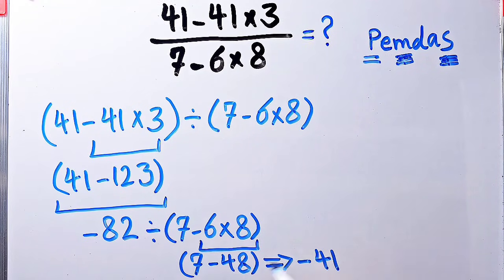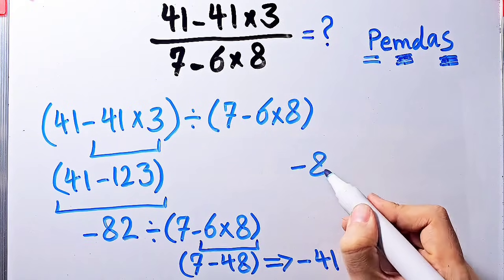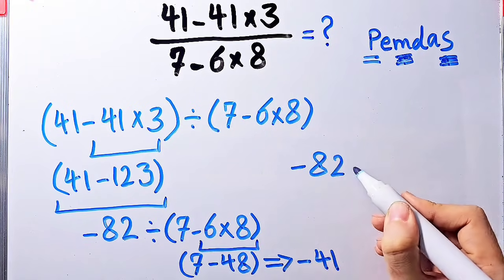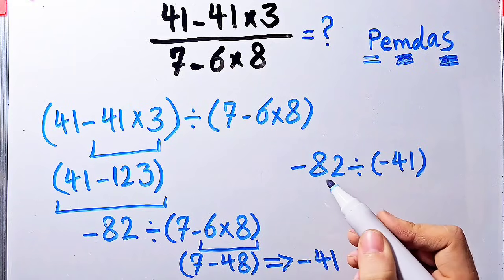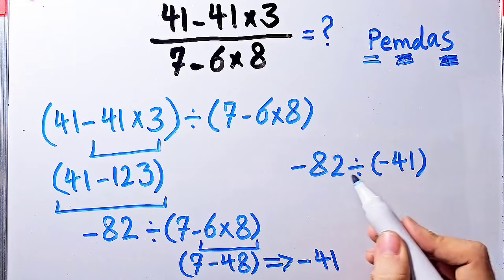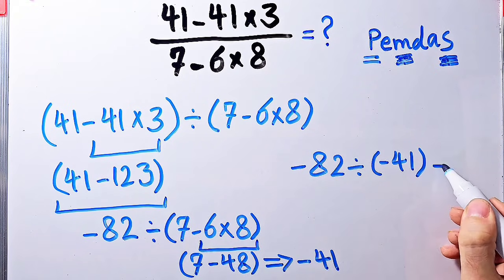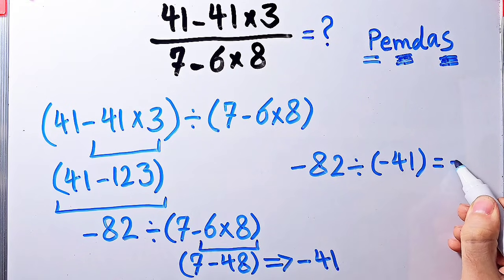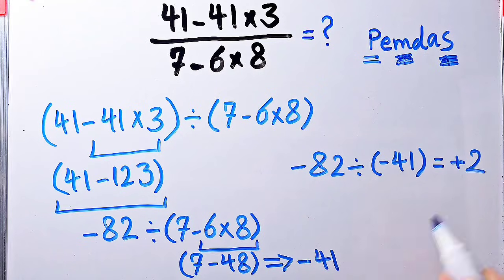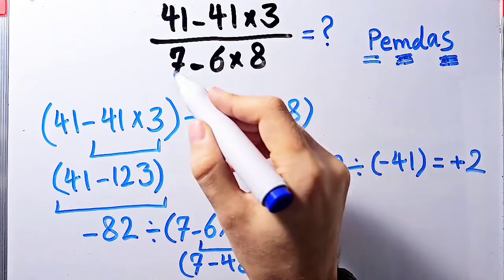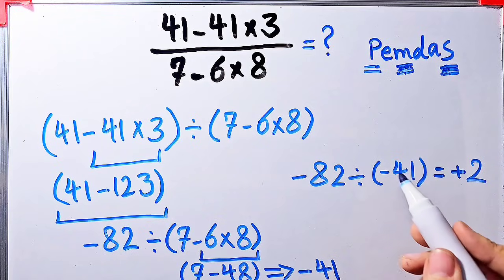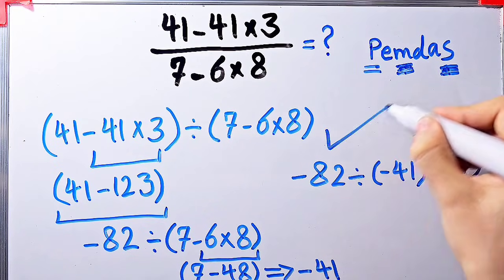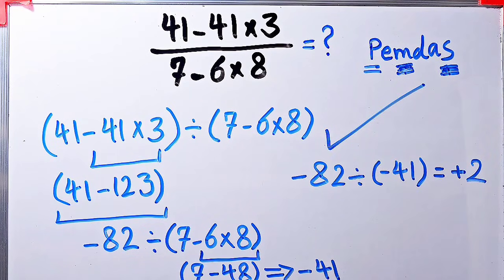Now the question is negative 82 divided by negative 41. Negative 82 divided by negative 41 equals 2. The final answer of this question equals 2. Guys, if you want to get the right answer, you must follow the PEMDAS rule. To see more math videos, subscribe to the channel. Goodbye.